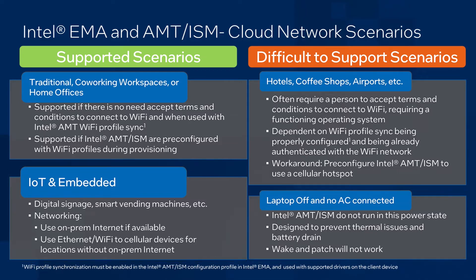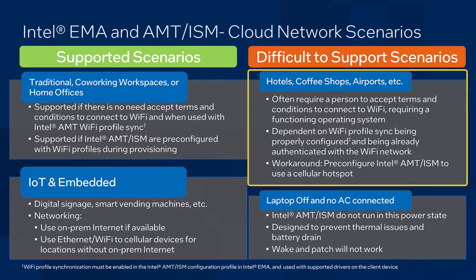Now let's talk about difficult to support scenarios, starting with Wi-Fi networks that use captive portals to manage access. If you have ever been to a coffee shop, a restaurant, or an airport where they provide Wi-Fi, they often require you to open a web browser to accept terms and conditions or pay for access. Intel EMA, Intel AMT, and ISM can work in these locations, provided there are no network restrictions that would prevent Intel EMA and the client devices from communicating. However, if you're unable to open a browser and accept terms and conditions, Intel AMT or ISM will not be able to connect to Intel EMA.